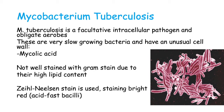Mycobacterium tuberculosis is a facultative intracellular pathogen, meaning it reproduces and survives inside the host cells. They are obligate aerobes, meaning they need oxygen to survive — and that's why they concentrate in the upper lobes of the lungs, because those are areas with high oxygen content. These bacteria are very slow-growing and have an unusual cell wall rich in lipids, mainly mycolic acid. Due to their high lipid content, they are not well stained with Gram stain, so the Ziehl-Neelsen stain is used, and they are described as acid-fast bacilli, staining bright red.